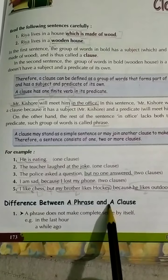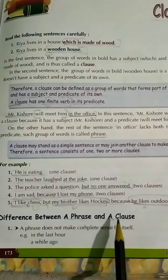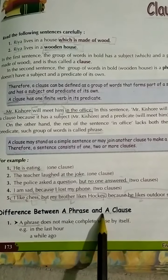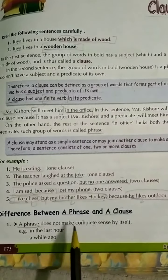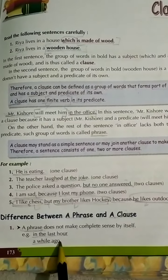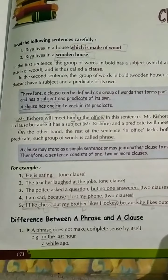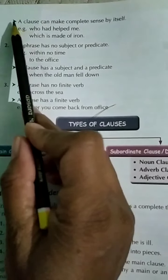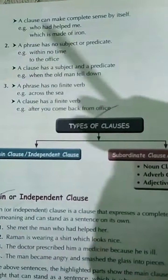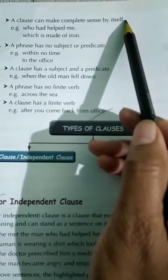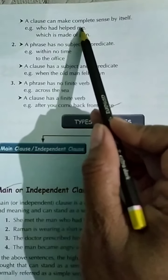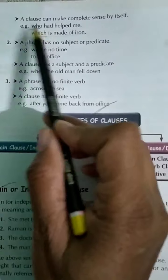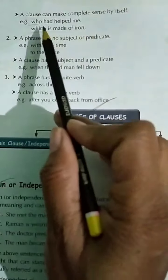What is the difference between a phrase and a clause? A phrase does not make complete sense by itself — it has meaning, but not a complete sense, like 'in the last hour,' 'a while ago,' 'in the corner,' 'after the dark,' 'before sunset.' On the other hand, a clause can make complete sense by itself, like 'who had helped me' or 'which is made of iron,' where 'who' and 'which' serve as subjects.